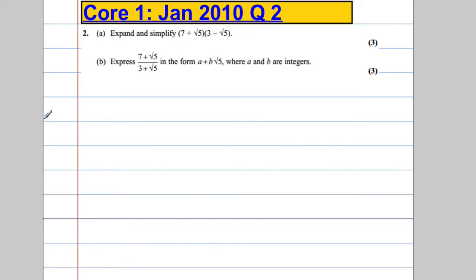Okay, question 2, part A. Expand and simplify 7 plus root 5 times 3 minus root 5. So, 2A. I'm just going to write down the question here. 7 plus root 5 times 3 minus root 5.